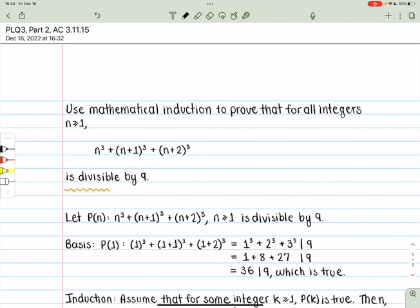The question asks, use mathematical induction to prove that for all integers n greater or equal to 1, the statement n³ + (n+1)³ + (n+2)³ is divisible by 9.